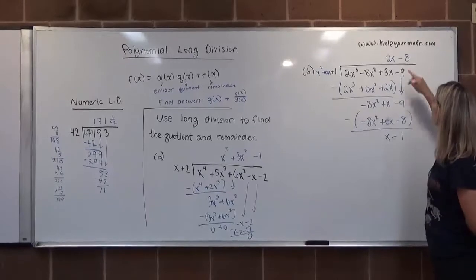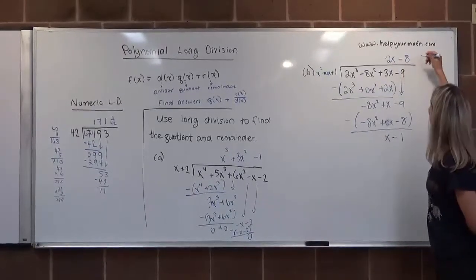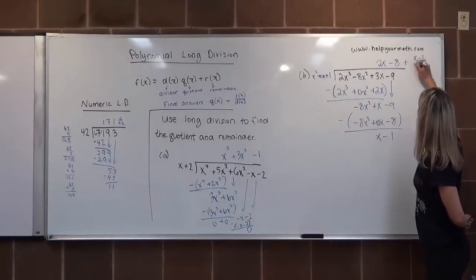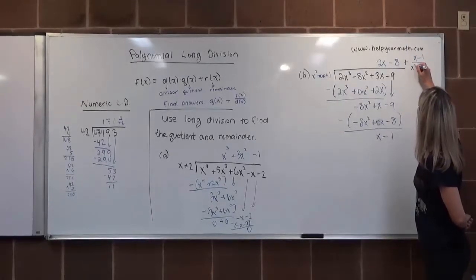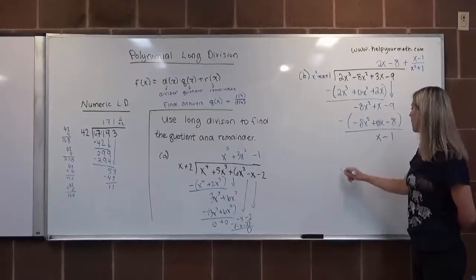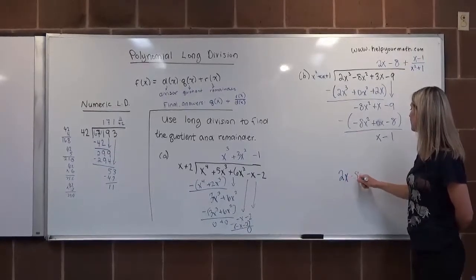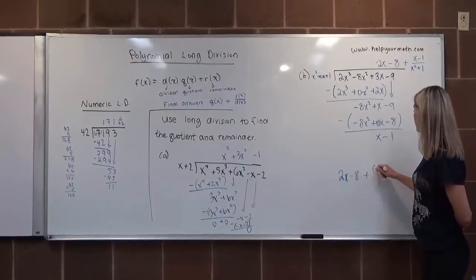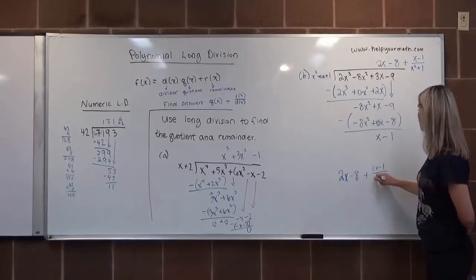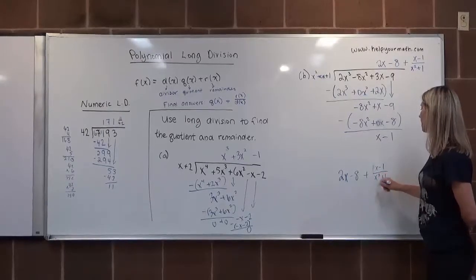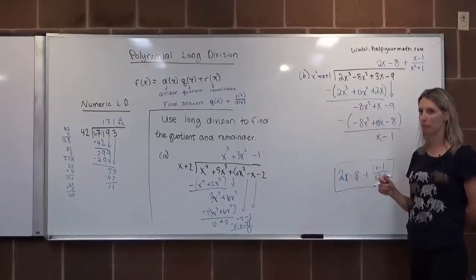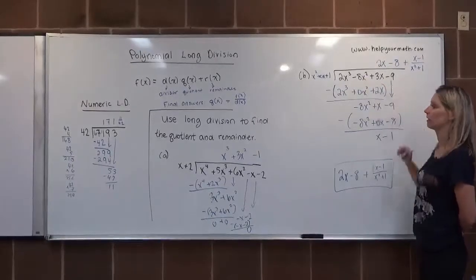Here's the quotient: 2x-8. We add to it the remainder divided by the divisor polynomial. So our final answer is 2x-8 plus (x-1)/(x²+1). If you want to check your work, multiply this by x²+1 — that should get you back to the original polynomial.